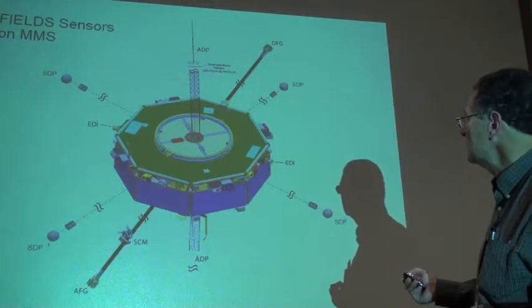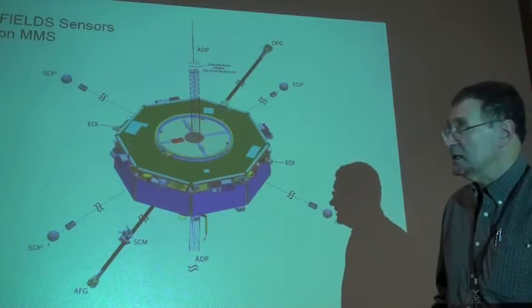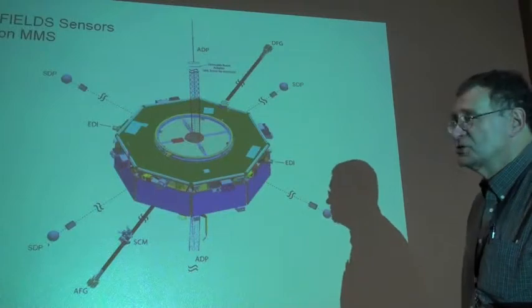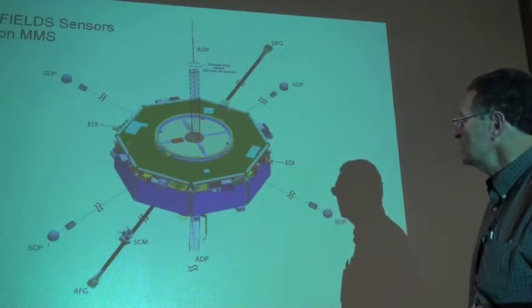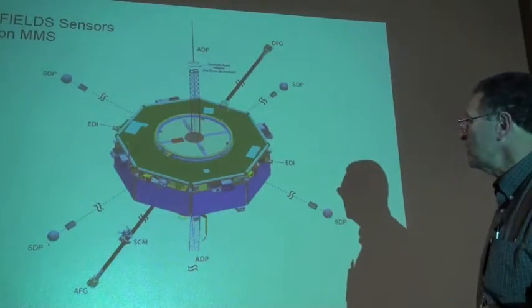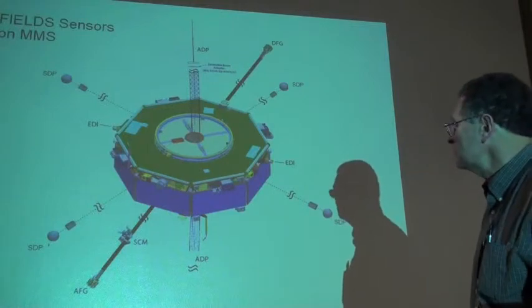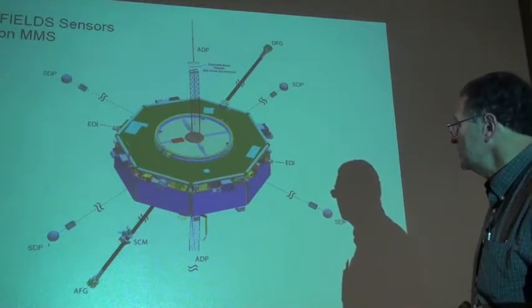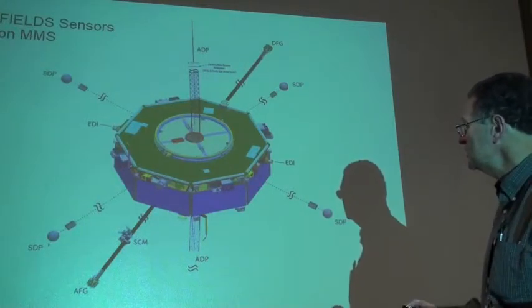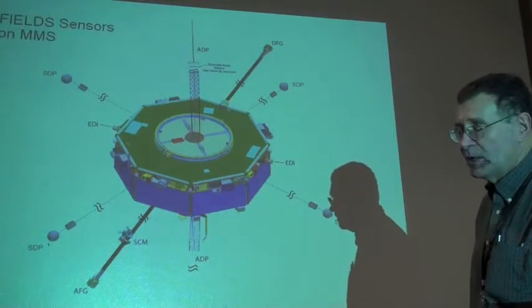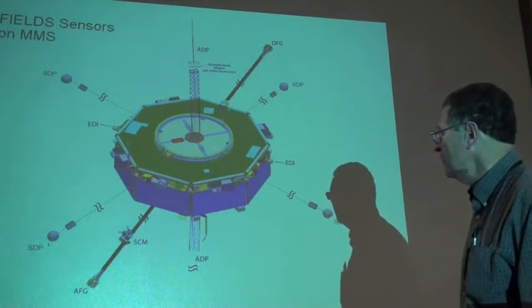They are calibrated with an instrument called the electron drift instrument, which uses a very thin beam of electrons to probe out from the spacecraft to determine the magnetic field away from the spacecraft to an accurate percentage. All four magnetometers work together to provide the magnetic field measurement.